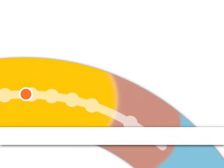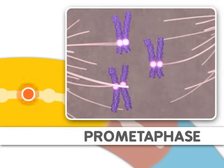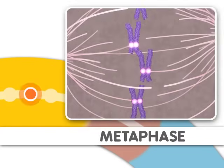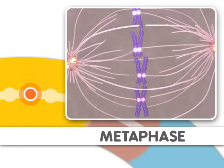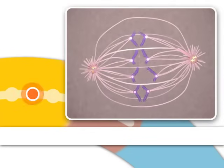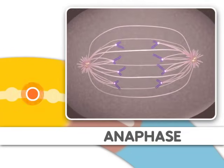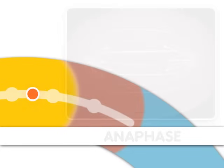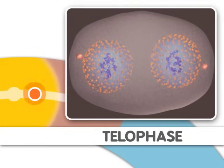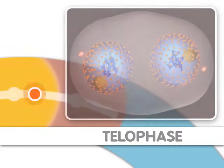Next comes prometaphase, where microtubules attach to the chromosomes. This step is followed by metaphase, where the chromosomes align. Metaphase is followed by anaphase, where the chromosomes separate. Finally, during telophase, nuclear membranes reappear around the two sets of chromosomes. Mitosis is now complete.